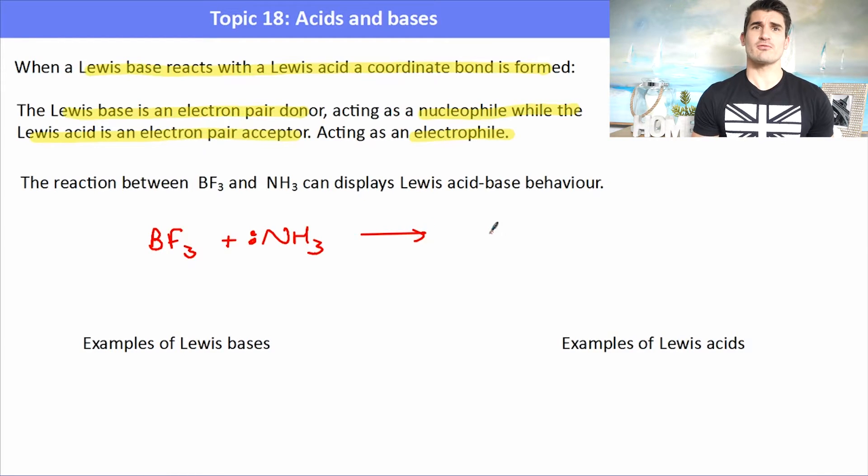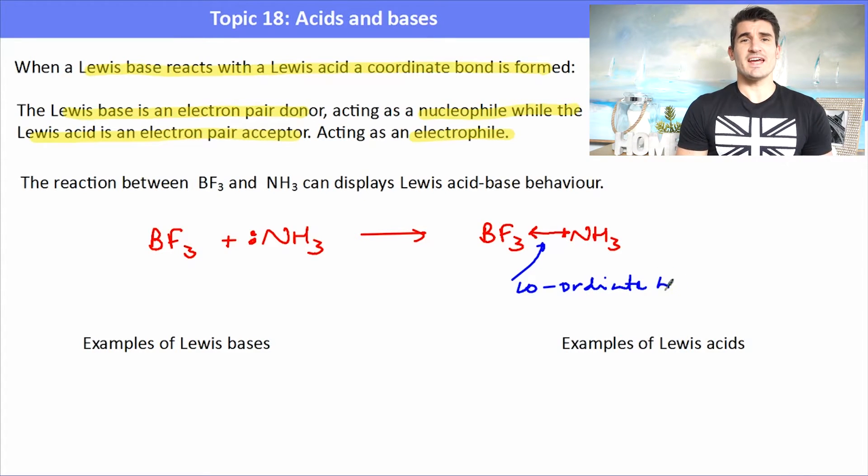The reaction between BF3 and NH3, we can show the coordinate bond via an arrow coming from the nitrogen heading towards the boron, showing that that is the coordinate bond formed between those two Lewis species. The NH3 acts as a nucleophile, the BF3 acting as an electrophile.